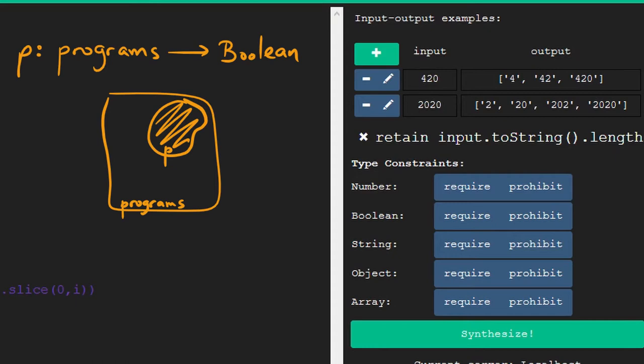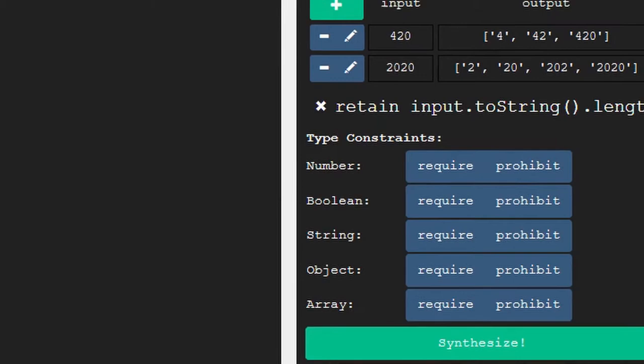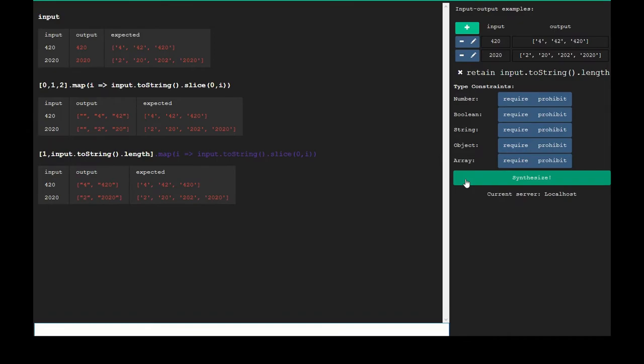For instance, returns true for all programs that for 420 return for 420. In a world of specification predicates, we can come up with all forms of specification, like the type constraints right below here. And with this set of predicates as the specification, RESL will now synthesize a completion to the sketch.